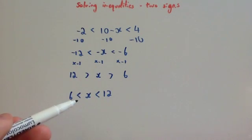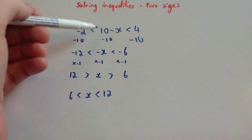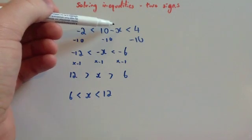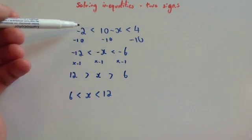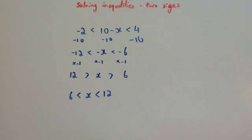Let's just try a number — let's try 8. 8 is in between 6 and 12. 10 take away 8 is 2, and 2 is in between minus 2 and 4. So it works. Fantastic.